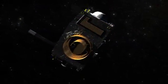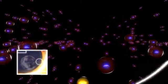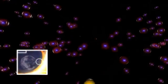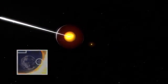IBEX can map such regions because it uses a technique called Energetic Neutral Atom Imaging. An energetic charged particle in the outer heliosphere hits a hydrogen atom, stealing its electron and becoming neutral.